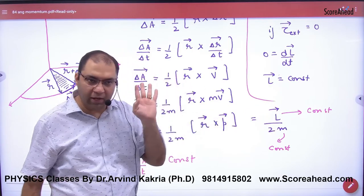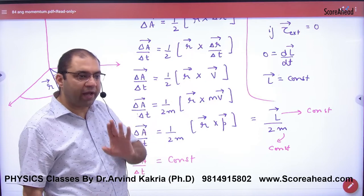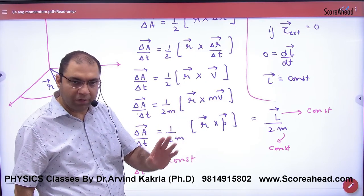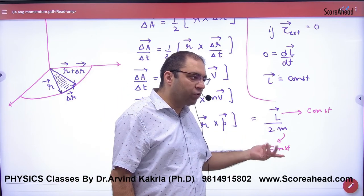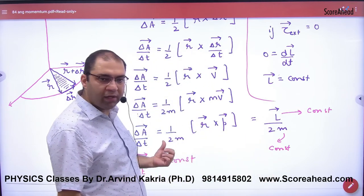R cross P is L. So I know that when a planet floats in a circle or floats in an orbit, what is L? Constant. 2 and M, constant. So what is aerial velocity? Constant.